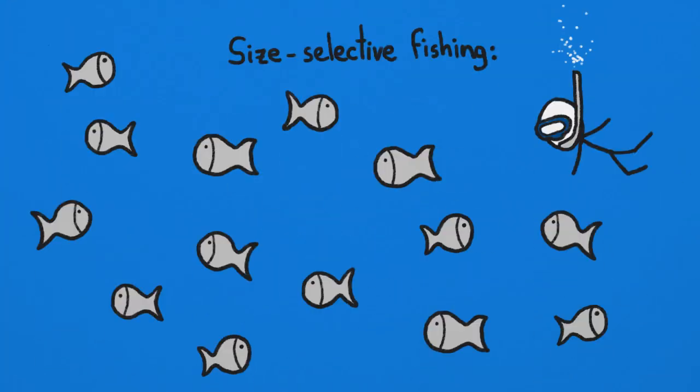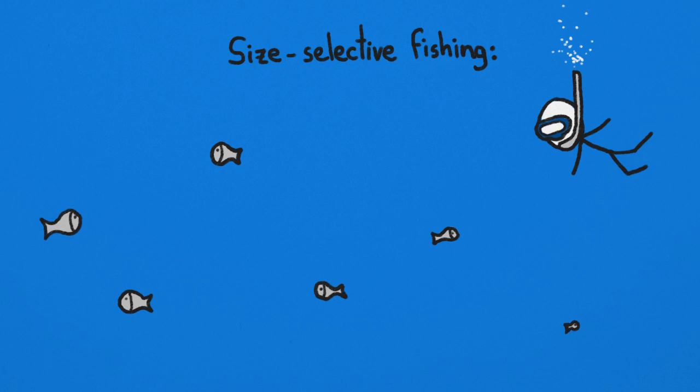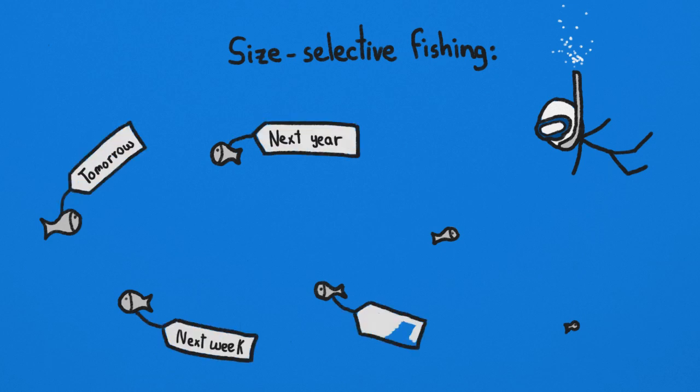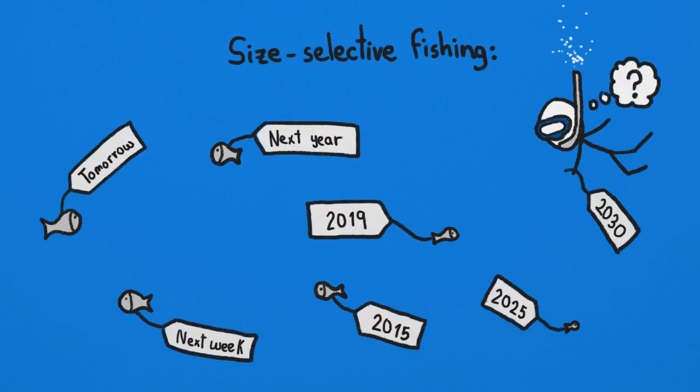Clearly, size-selective fishing means fewer and smaller fish in the water, which suggests it's not the best way to keep our fish supply stocked for future human generations.